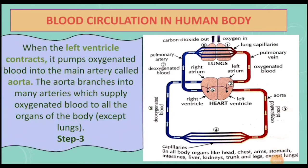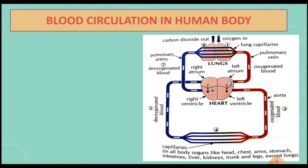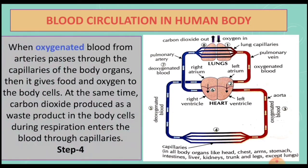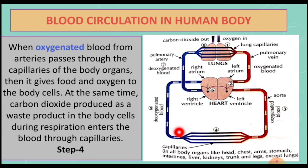Step three: when the left ventricle contracts, it pumps oxygenated blood into the main artery called the aorta. The aorta branches into many arteries which supply oxygenated blood to all organs of the body except the lungs. Step four: when oxygenated blood from the arteries passes through the capillaries of the body organs, it gives food and oxygen to the body cells, while carbon dioxide produced as a waste product during respiration enters the blood through capillaries.